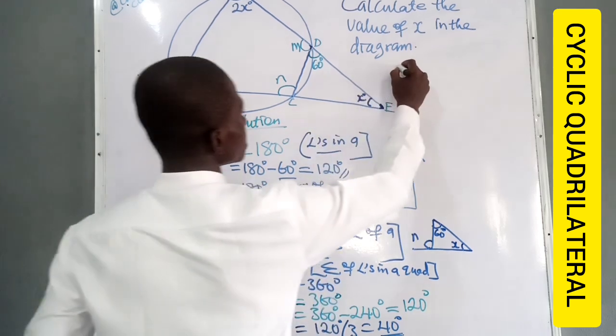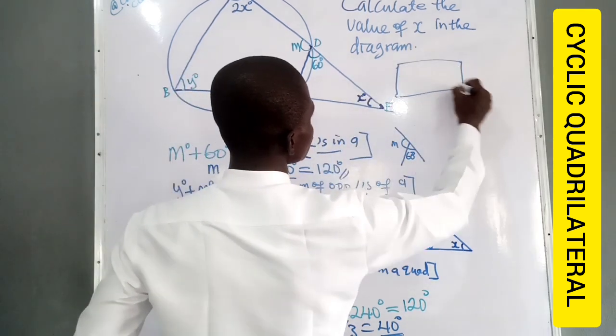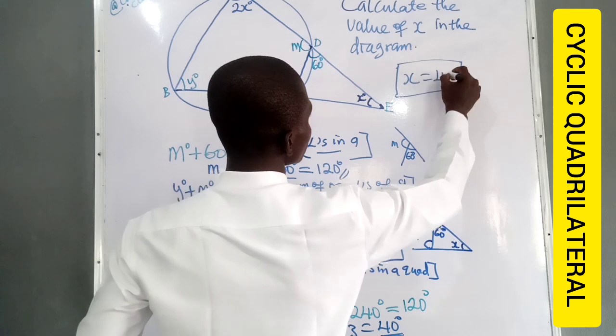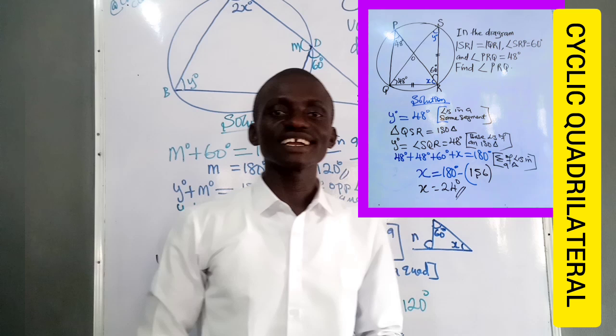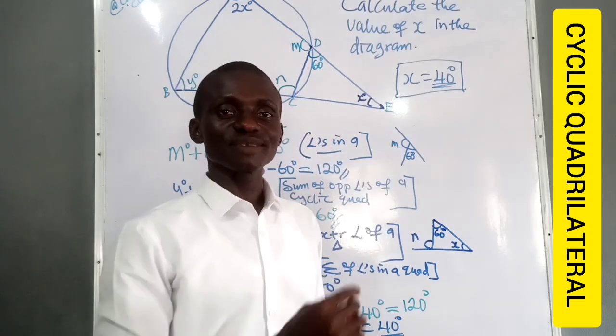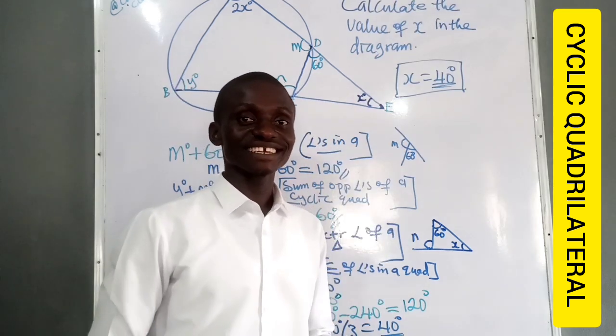So we can now say that the value of X is equal to 40 degrees. Thank you for watching. Subscribe, like. For more on geometry, please check my playlist on my YouTube channel. Bye bye.